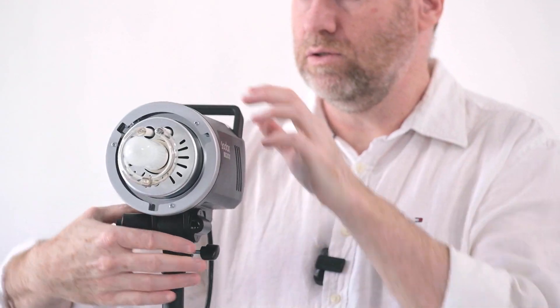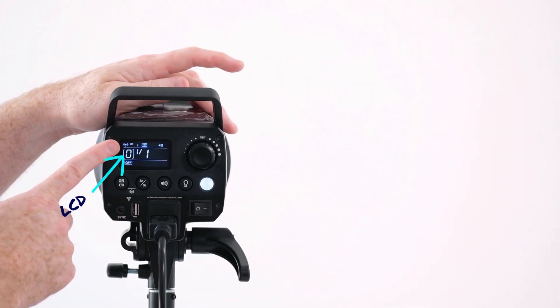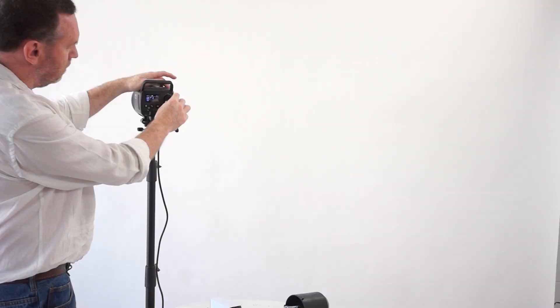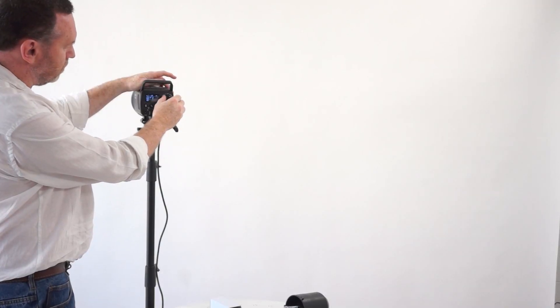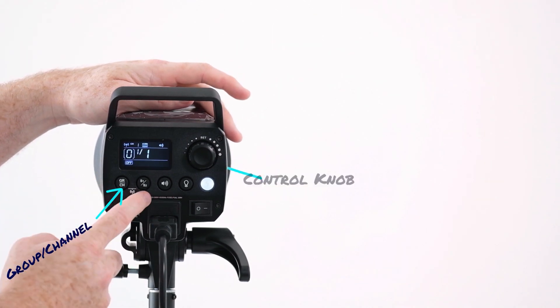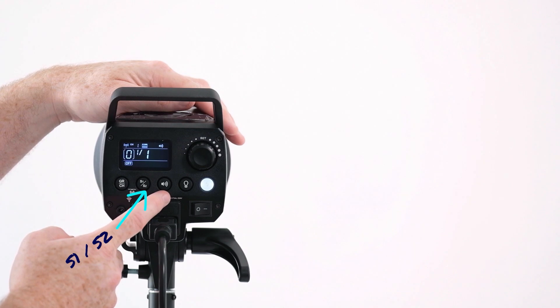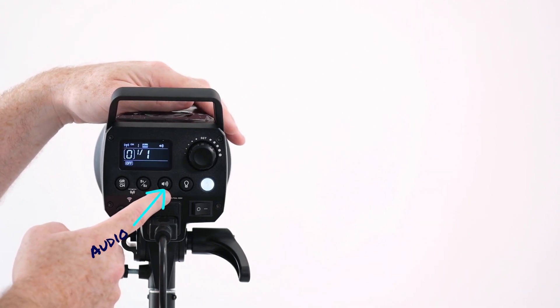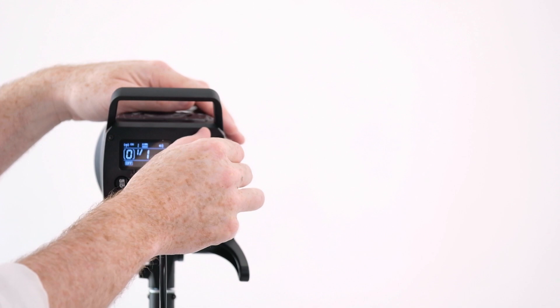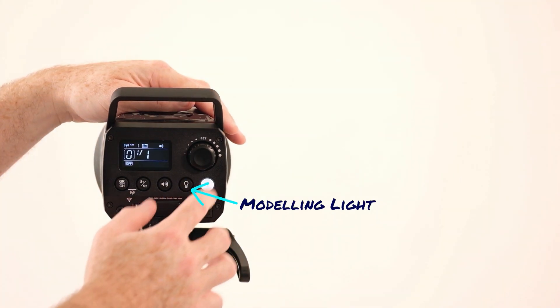On the back here we have an LCD panel and digital readout. We have a control knob which can be used for making various adjustments. We have a group and channel button, we have S1 and S2—they're the slave modes. We have the audio button, which is basically that beeping you're hearing as I turn that, the modeling light button for turning that on and off in different modes, and the test fire button itself.